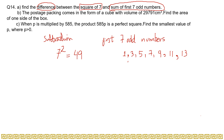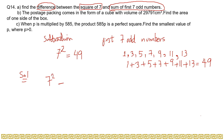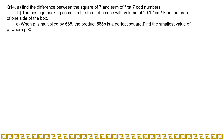Now let's add these 7 odd numbers because we have to find the sum. That is 1 + 3 + 5 + 7 + 9 + 11 + 13, and when you add all of these you get 49. The question is asking you to find the difference: 7 squared minus the sum of the first 7 odd numbers, which is 49 minus 49, and that gives you 0. So the answer for part A is 0.